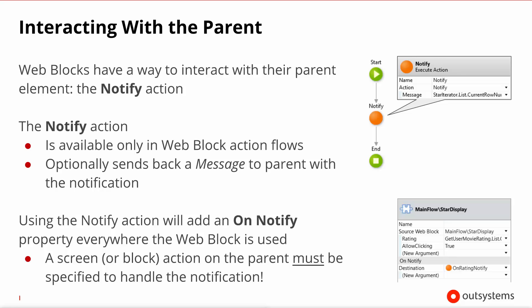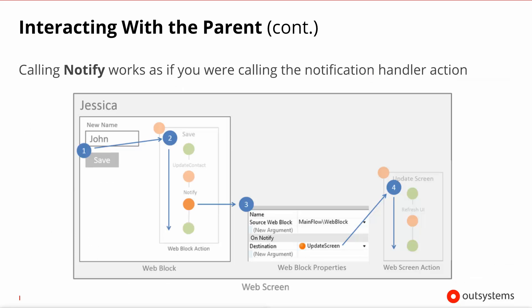To better illustrate what's happening, we have a diagram that illustrates the notify mechanic. From left to right: in the web block someone presses the save button, which calls the web block action. As it executes, it finds a notify call. This looks into the screen where this block is instantiated and finds out what screen action handles this notification. It then moves on to that screen action and runs it. Therefore the screen can respond to an event that happened inside the web block, with no need for output parameters.